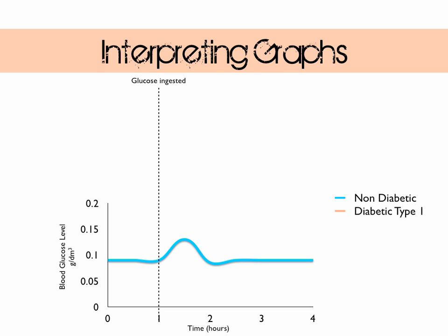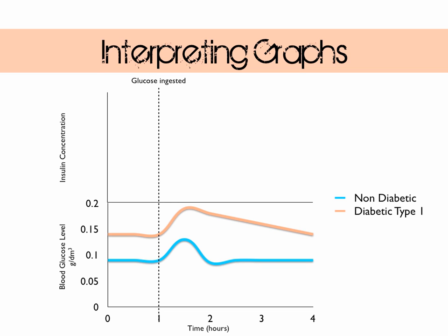For the type 1 diabetic, the glucose meal is taken at the same time, and the initial rise in blood glucose concentration is the same since the same amount of sugary drink is used. However, it takes a much longer time for blood glucose to return to normal, as the only process using up glucose is cellular respiration — insulin is absent to control other processes like glycogen formation.